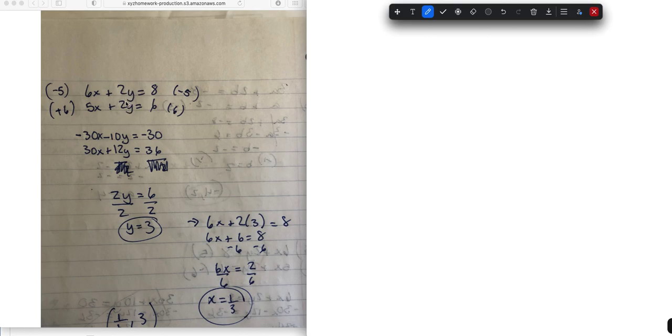So with that in mind, if I look at these two y's, they're both 2's already. So if I just did 6x plus 2y equals 8, and then I just did the negative of this one, I can multiply it by negative 1.